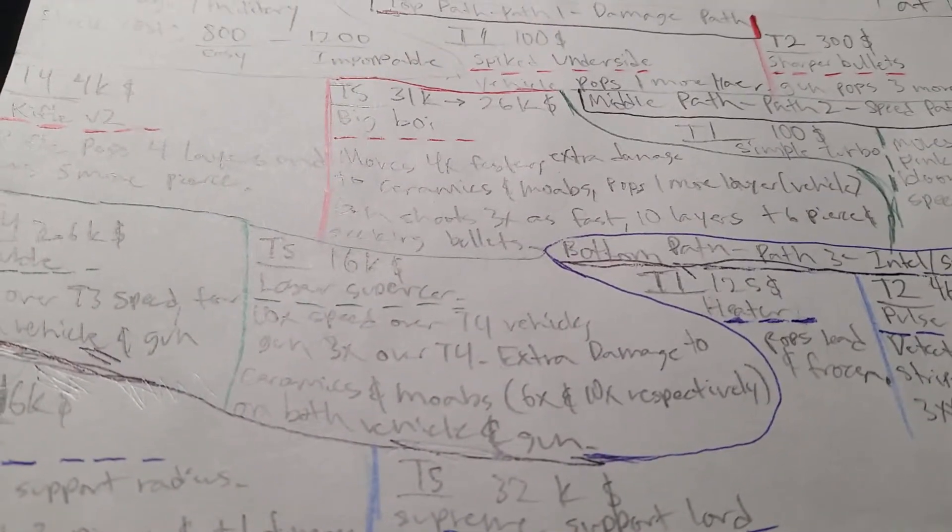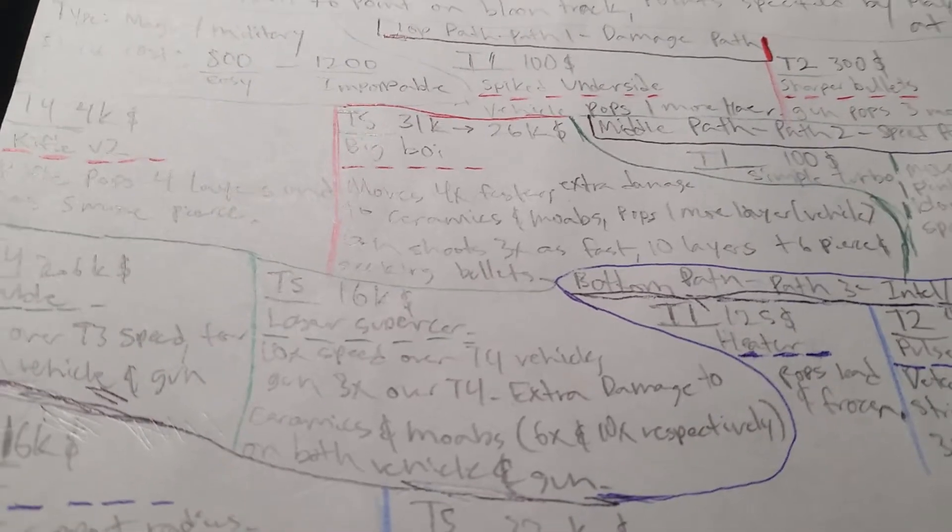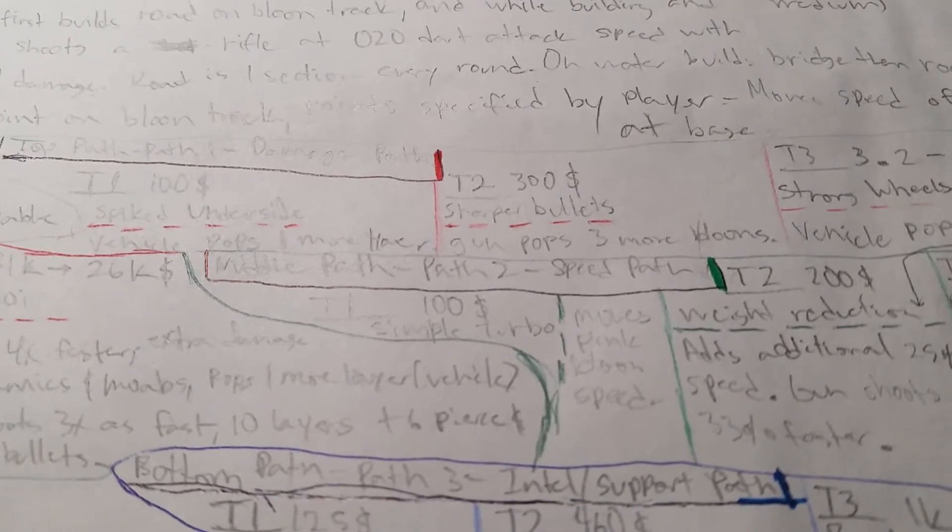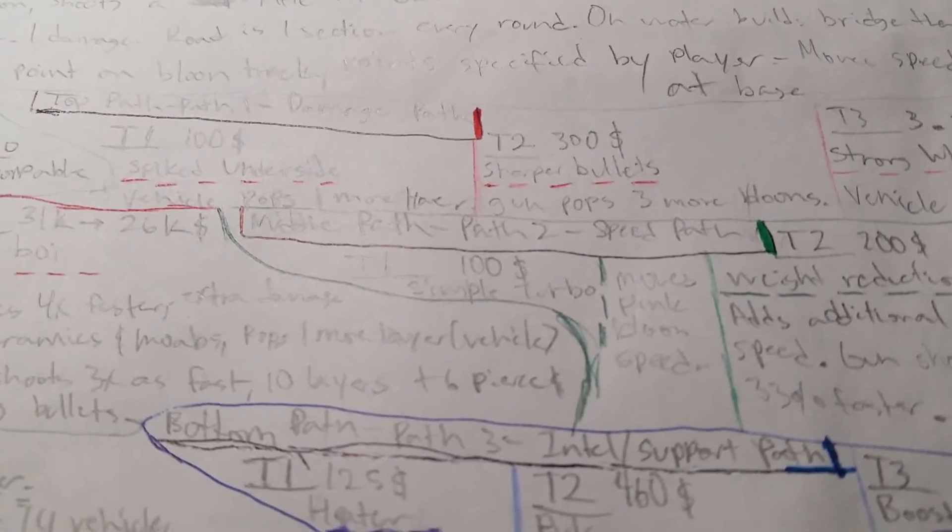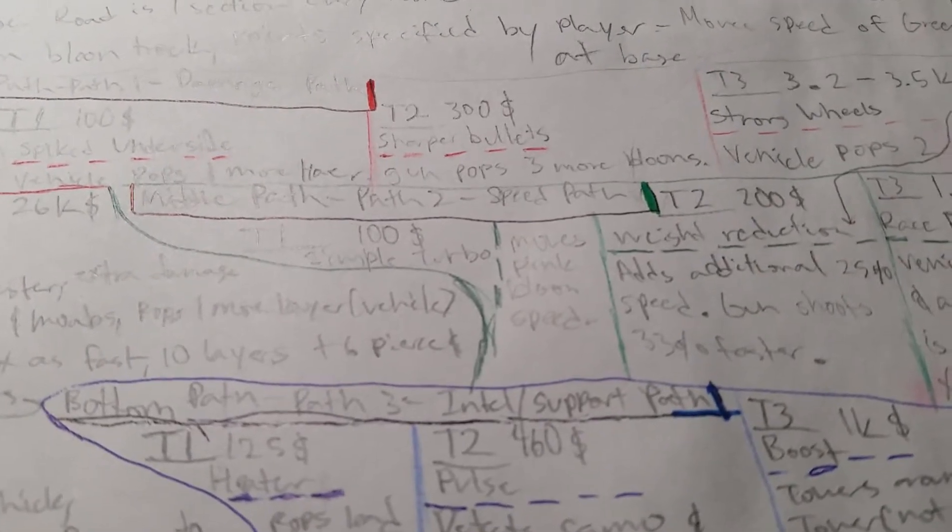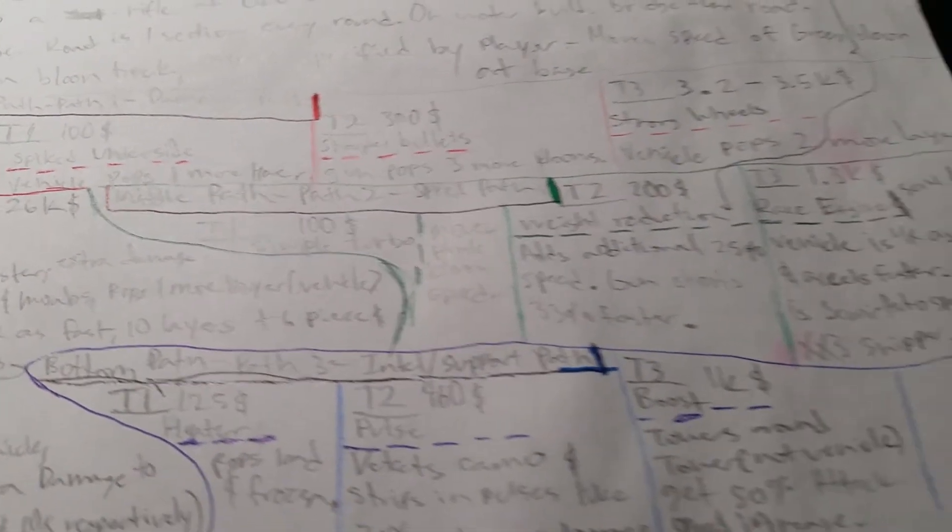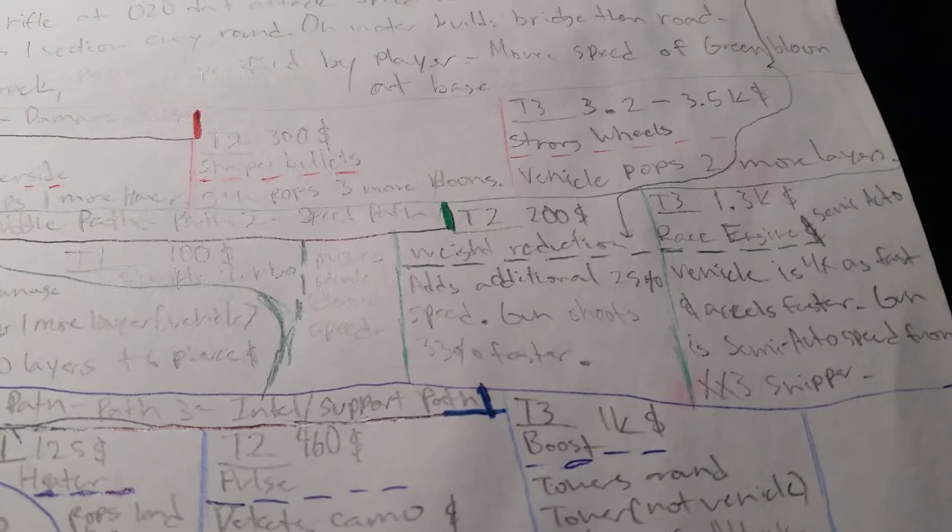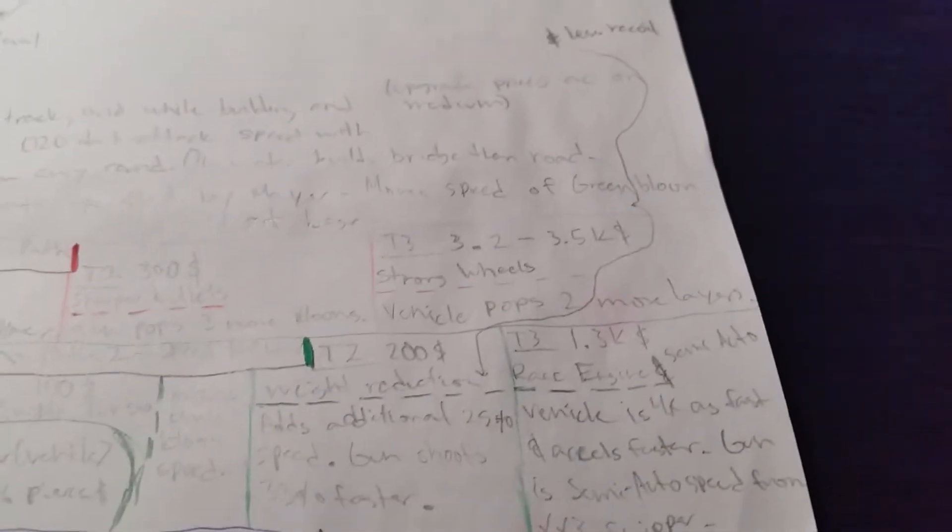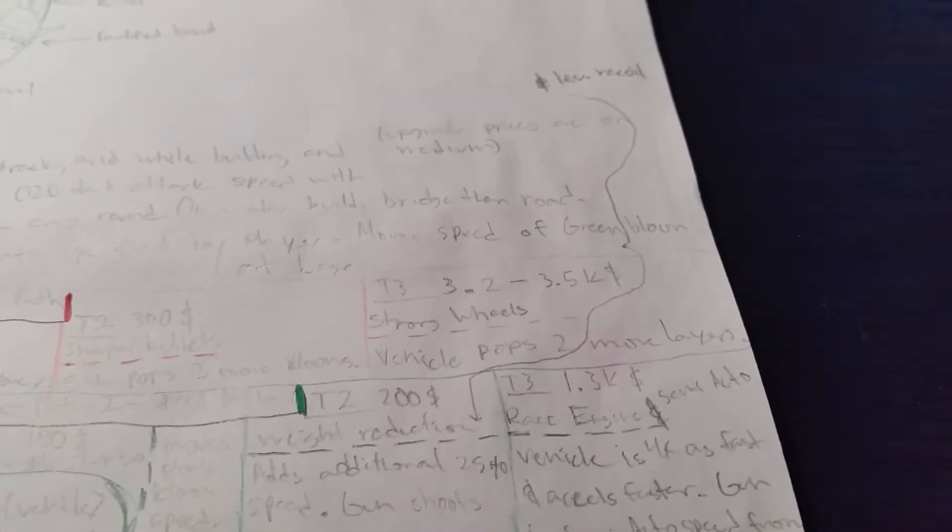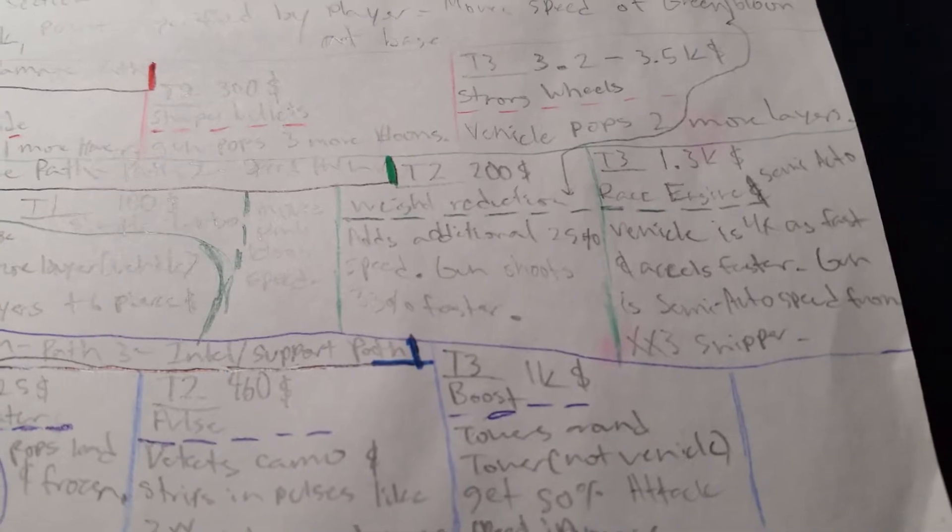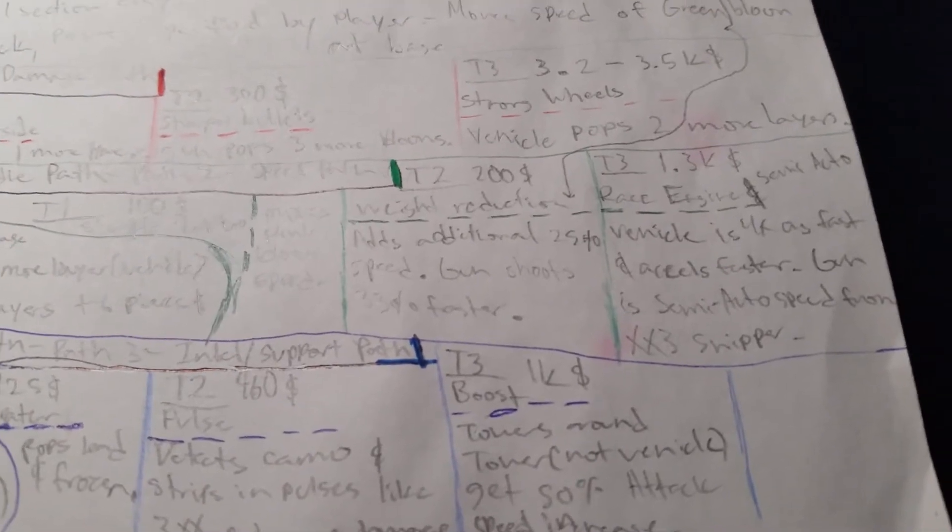Middle path or the speed path. Tier 1, 100 dollars, civil turbo, the vehicle now moves pink balloon speed. Tier 2, 200 dollars, weight reduction. With weight reduction and less recoil it adds an additional 25 percent speed to the vehicle, and gun shoots 33 percent faster.